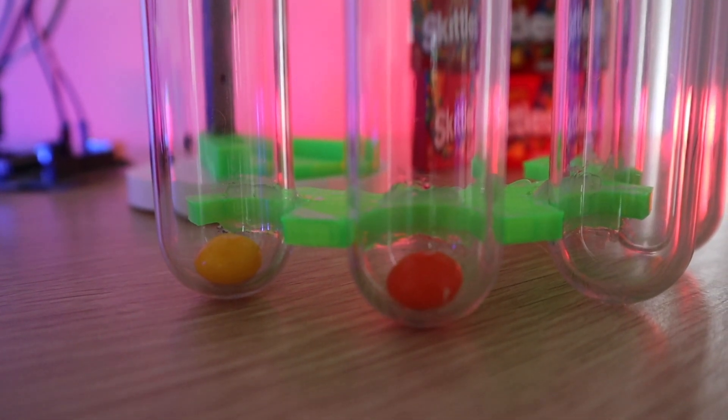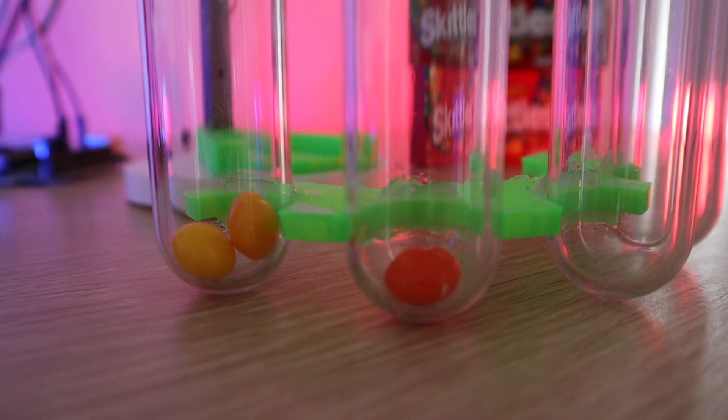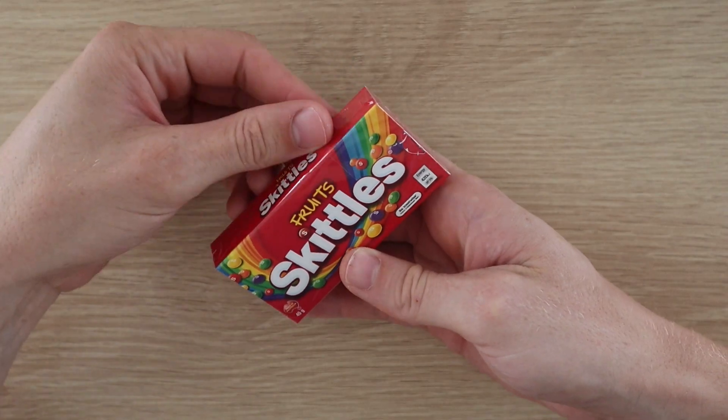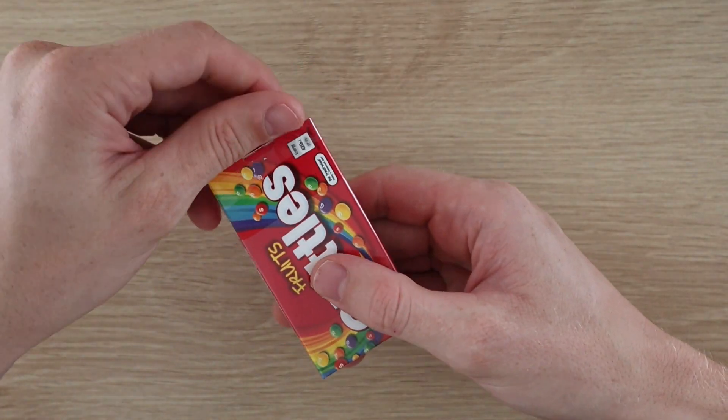Hey guys, so today I'm going to be showing you how to build your own Skittles or M&M color sorter using an Arduino and a cheap color sensor module to detect the Skittle color and two servos and some 3D printed parts to sort them.